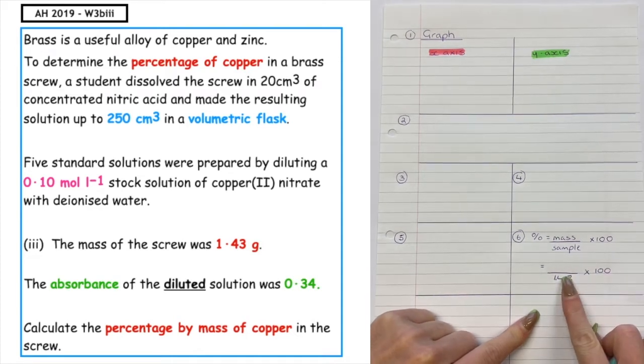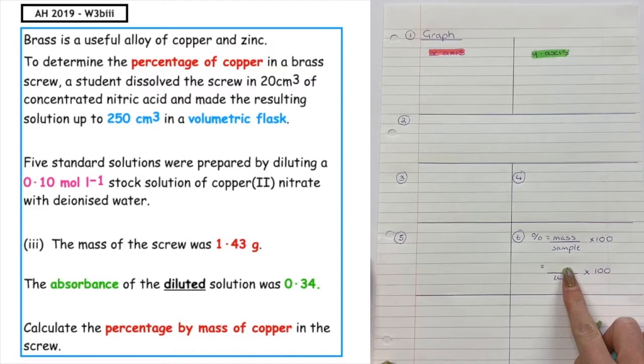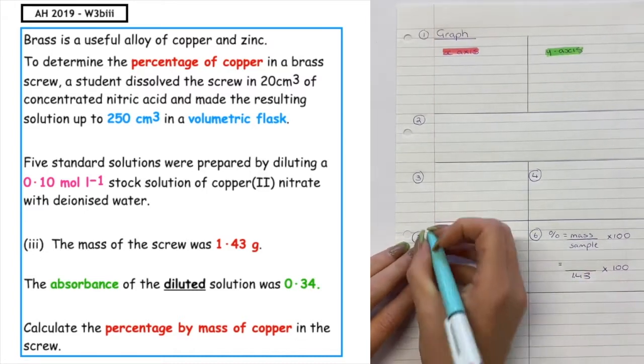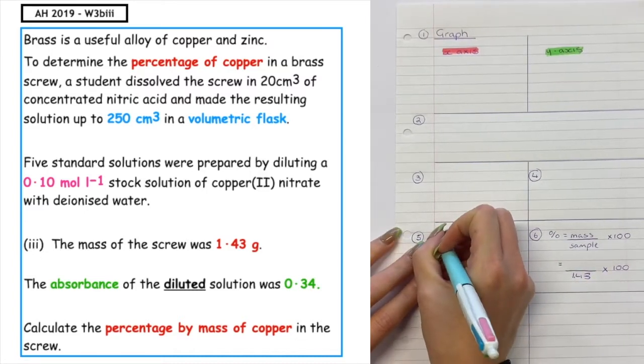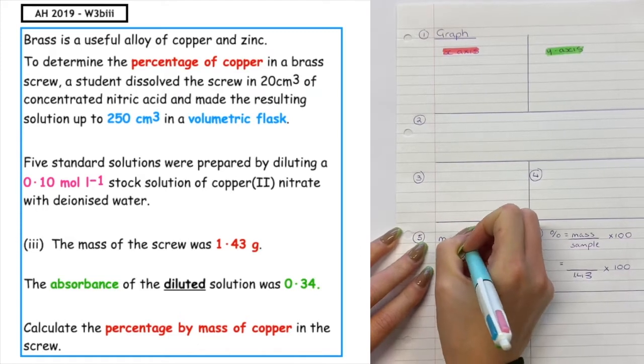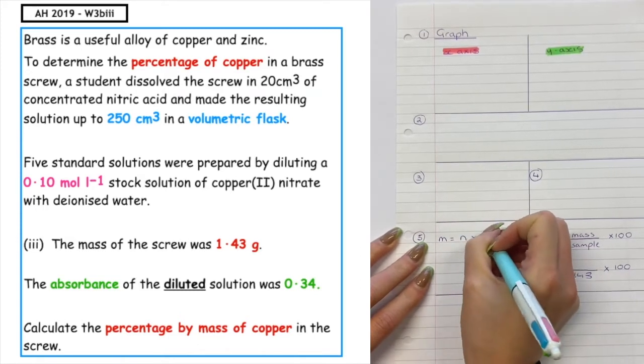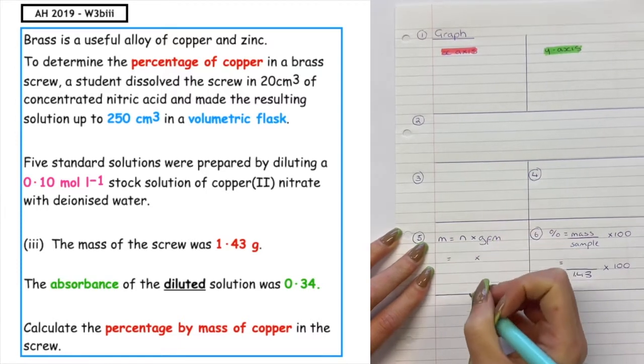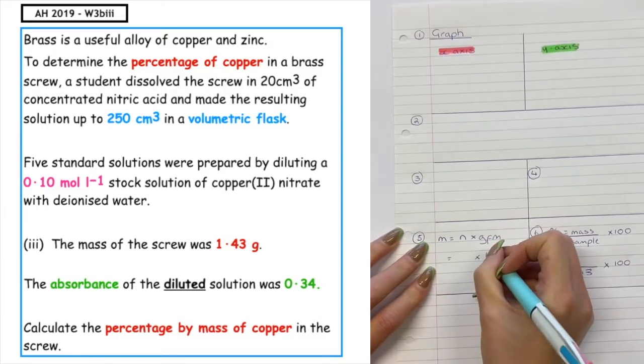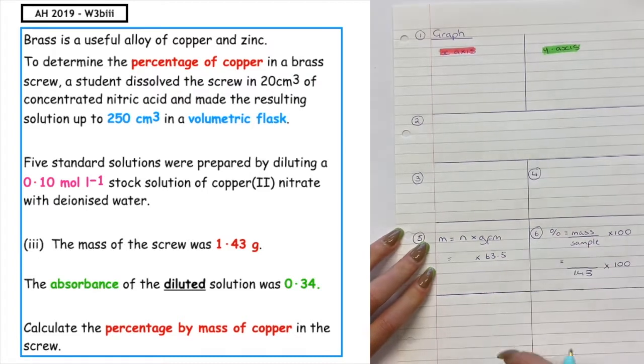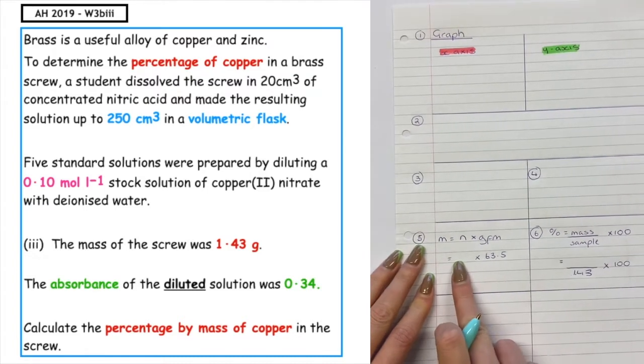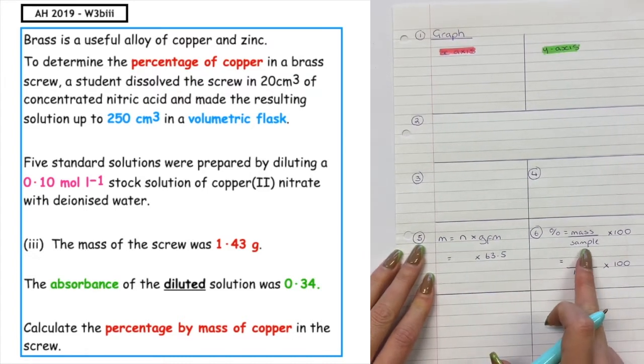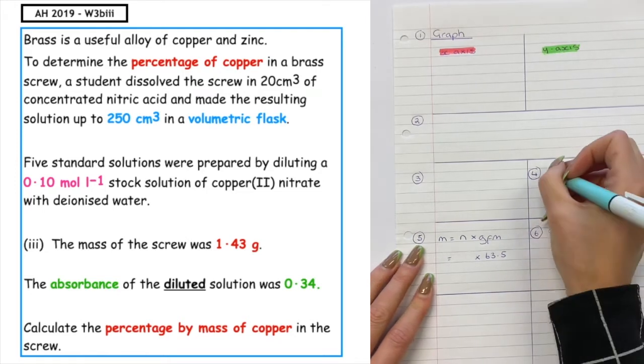To complete this calculation, we would need to have the mass of the copper screw. So at step number five, we would have mass equals number of moles times the GFM. We can look up in the data booklet the gram formula mass for copper, which is 63.5. To complete this calculation, we would need to calculate the number of moles.